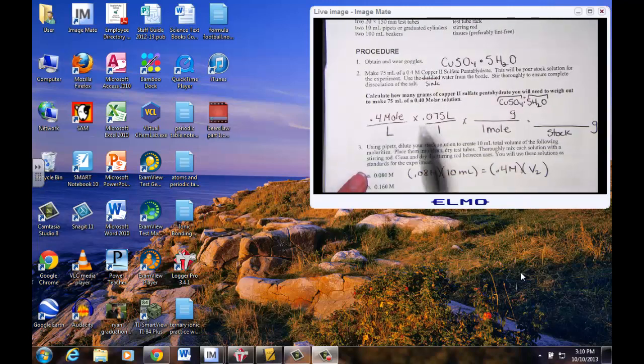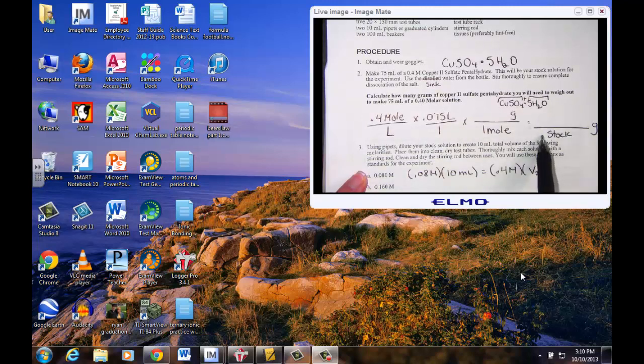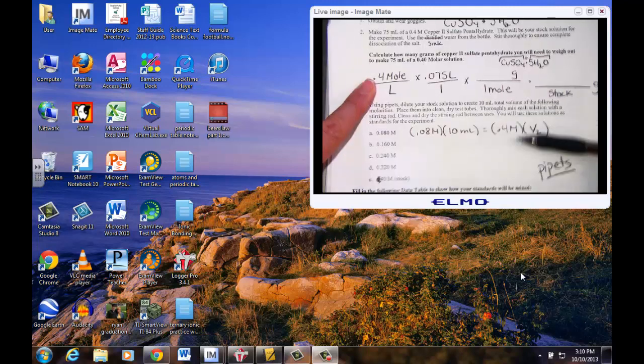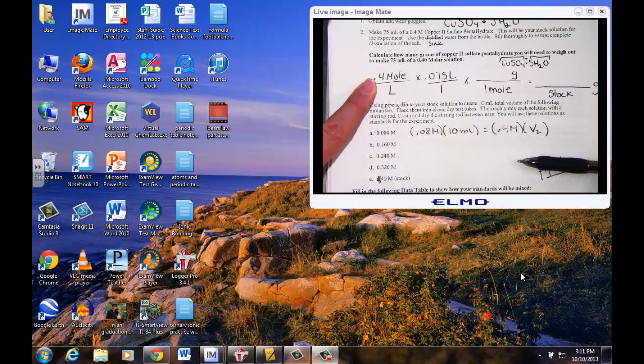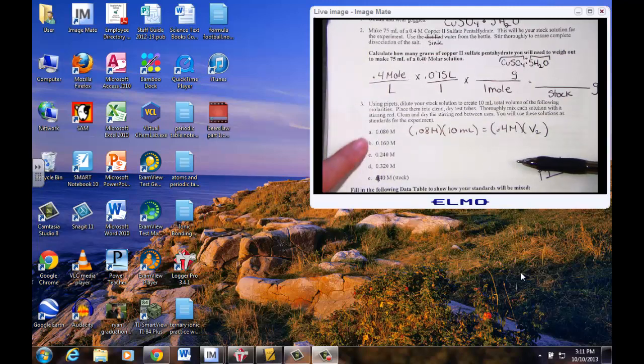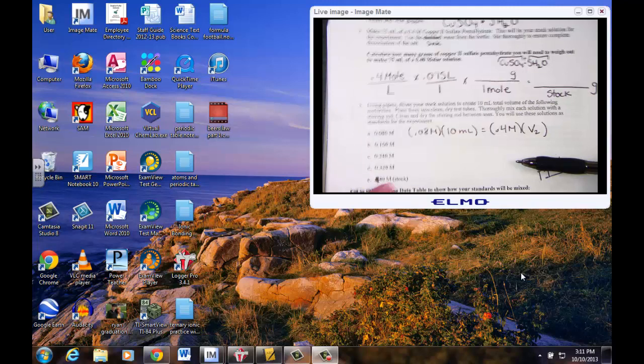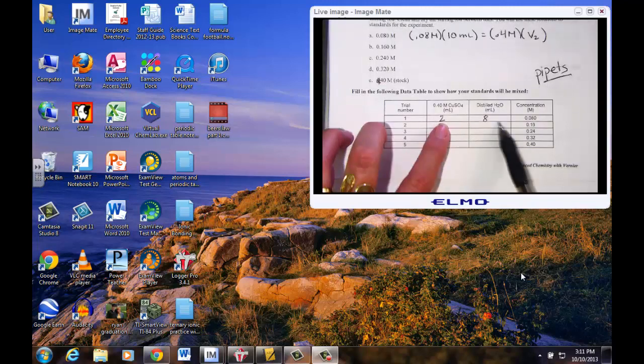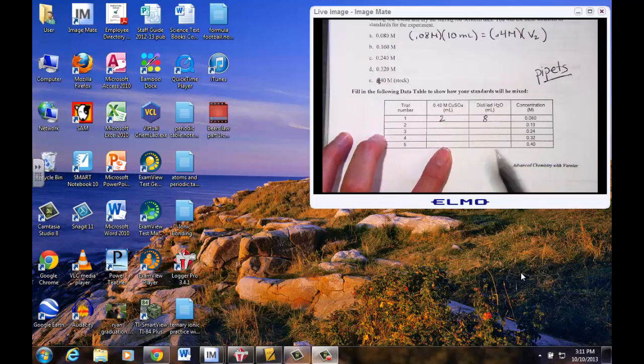If you recall as part of our experiment we had created a series of solutions. You started with a known amount of copper sulfate pentahydrate and recorded the number of grams you had to measure out, added to 75 mils to create your 0.4 molar solution. You then went through a process of MV equals MV, the dilution process of creating other standards from your stock solution. From the stock solution then you filled out your grid of how many mils of each to create a total volume of 10 mils.